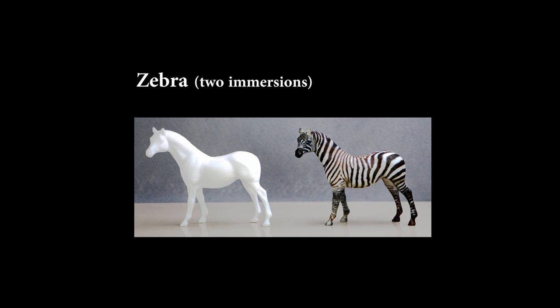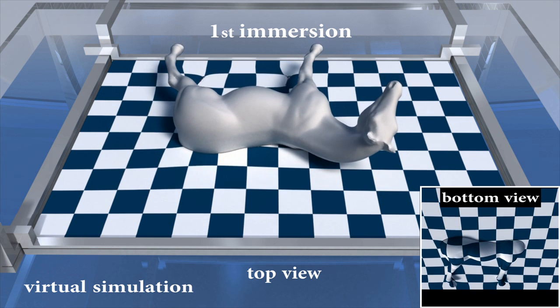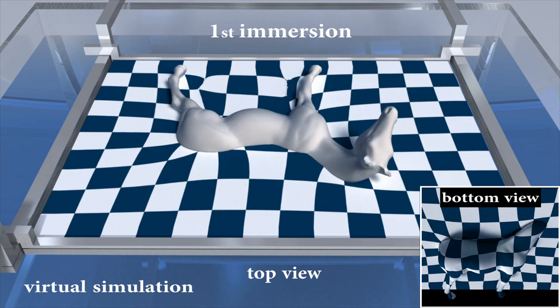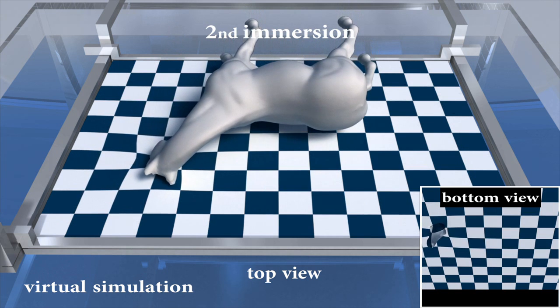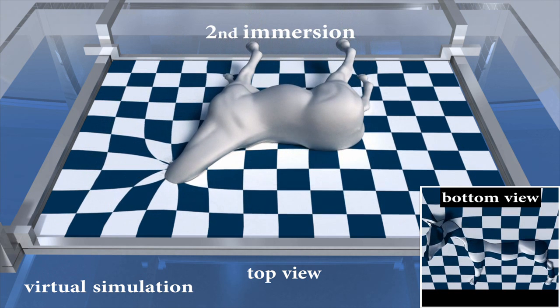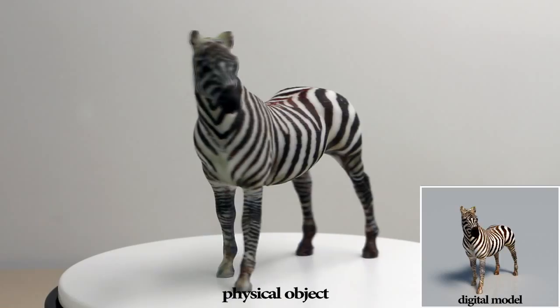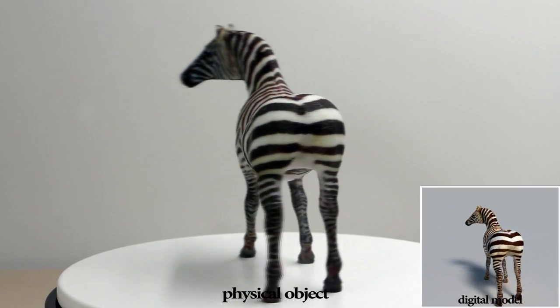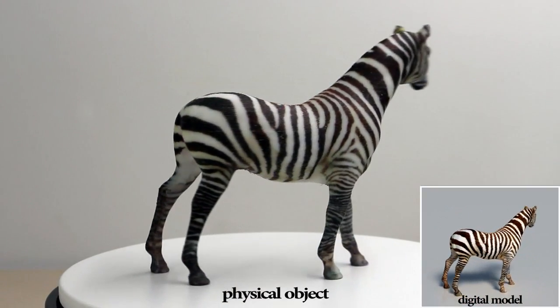Let's see more results. Here is a zebra colored with two immersions. We first show the virtual simulation and then the colored result. You can see our method generates precise alignment of surface textures to a 3D surface.